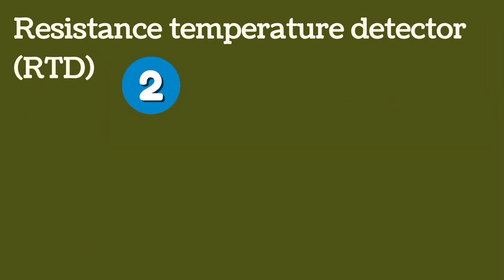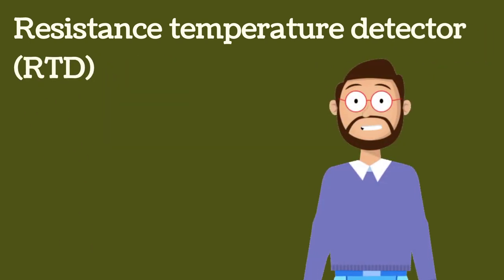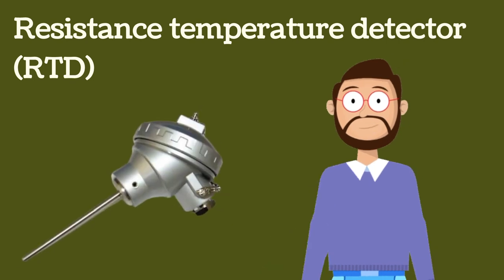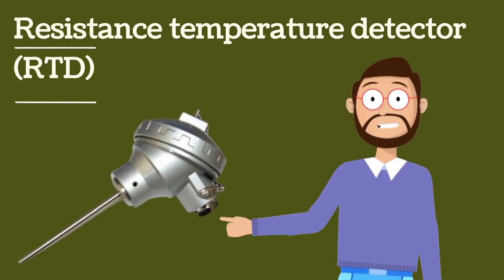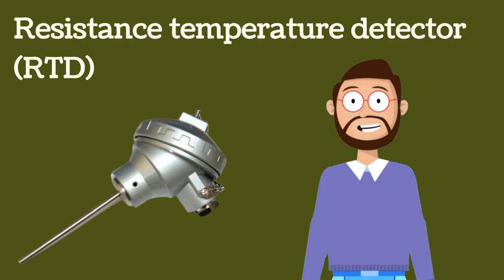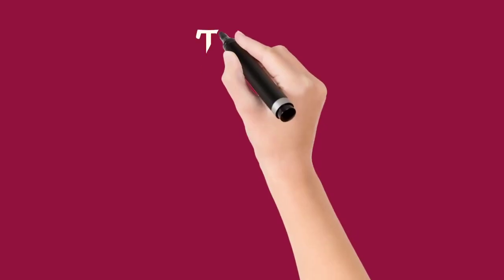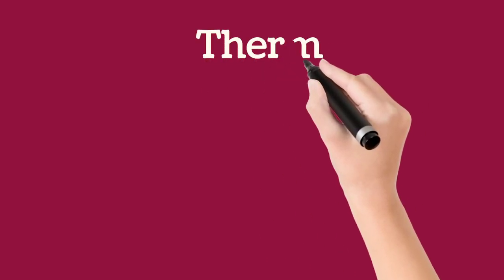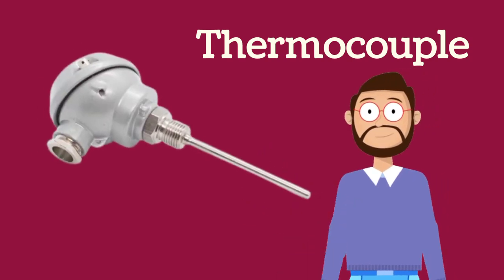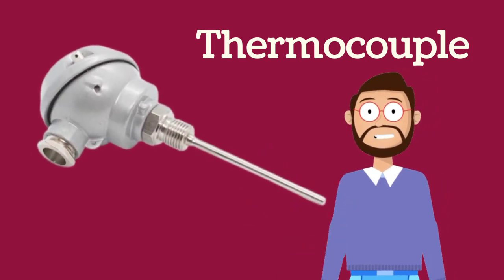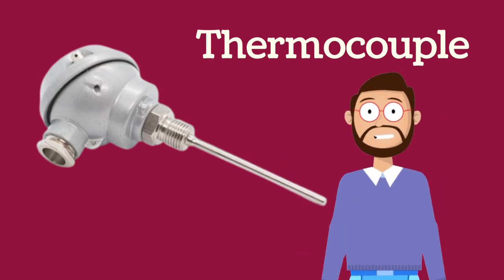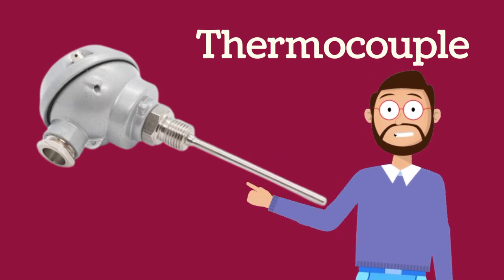The second instrument is the resistance temperature detector, and the short form is RTD. RTD is also mounted in field to measure the temperature. Apart from RTD, thermocouples are also used to measure the temperature. To measure different temperature ranges, different types of thermocouples are used.